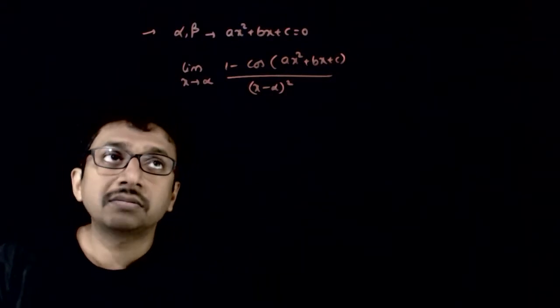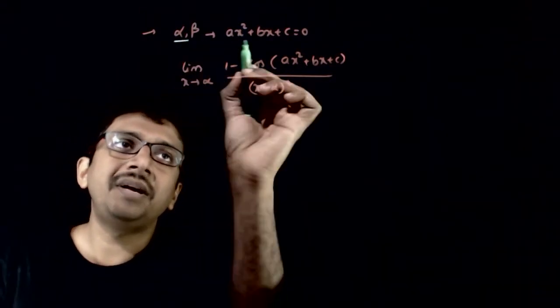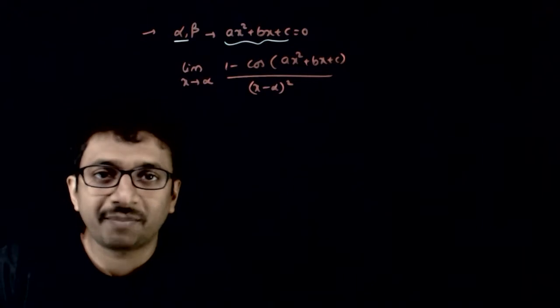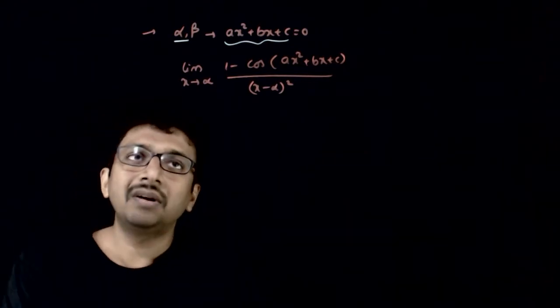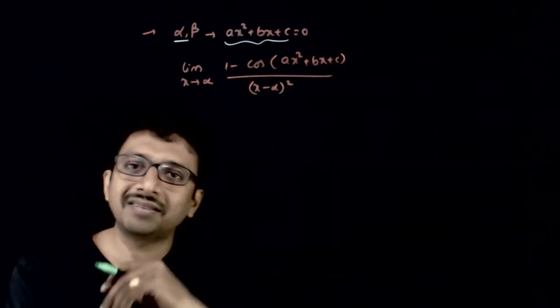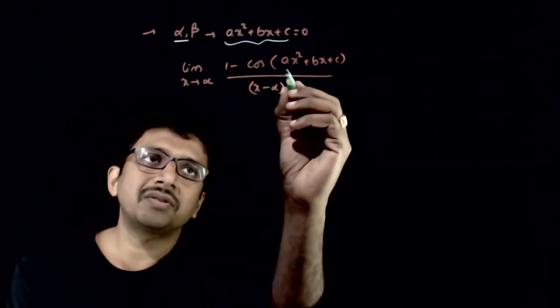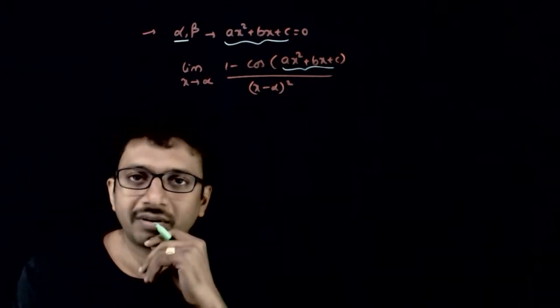Welcome students. In this question, you are given that alpha and beta are the roots of ax² + bx + c = 0, and you are asked to find this limit: 1 minus cos of something, divided by (x minus alpha) whole square.